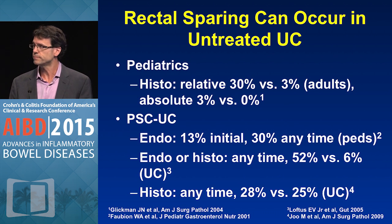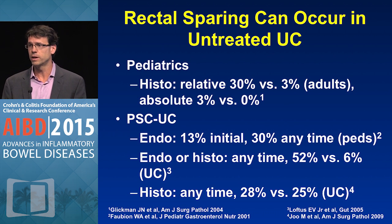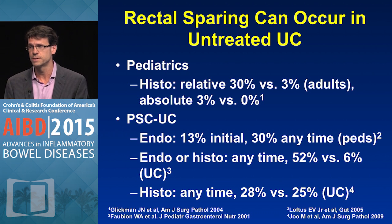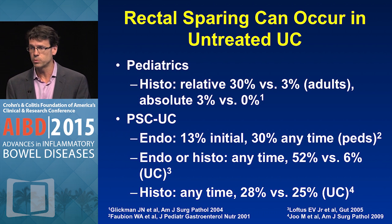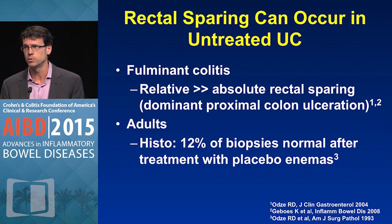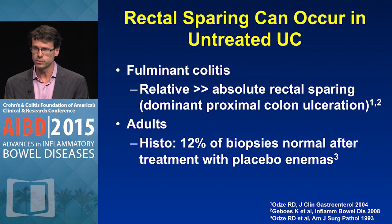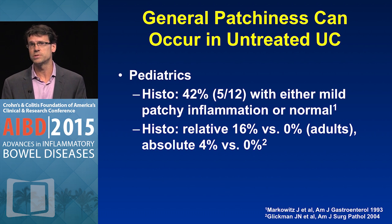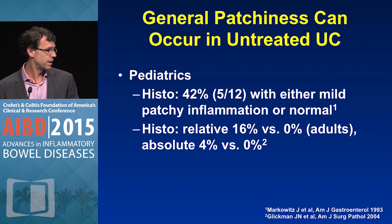First, rectal sparing. It turns out that in untreated UC, you can get rectal sparing in a variety of situations. One of the most common is in pediatric patients, who tend to have more pancolitis but also more rectal sparing and general patchiness. Also, in PSC, you may see more rectal sparing than in UC without PSC. In fulminant colitis before it's been treated, you can see rectal sparing, but it tends to be much more often relative as opposed to absolute. Occasionally, adults can also exhibit rectal sparing.